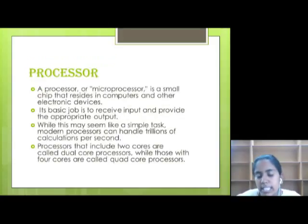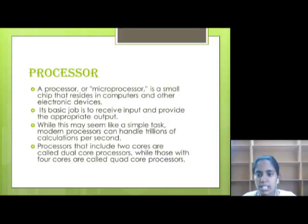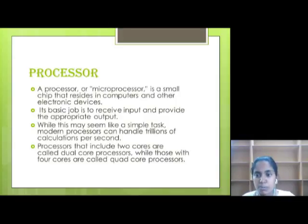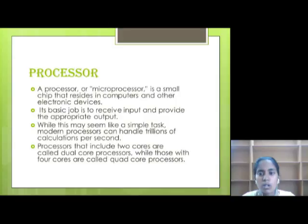Here is the next part, that is processor. A processor or microprocessor is a small chip that resides in computers and other electronic devices. Its basic job is to receive input and provide the appropriate output. While this may seem like a simple task, modern processors can handle trillions of calculations per second. Processors with 2 cores are called dual core processors, while those with 4 cores are called quad core processors.